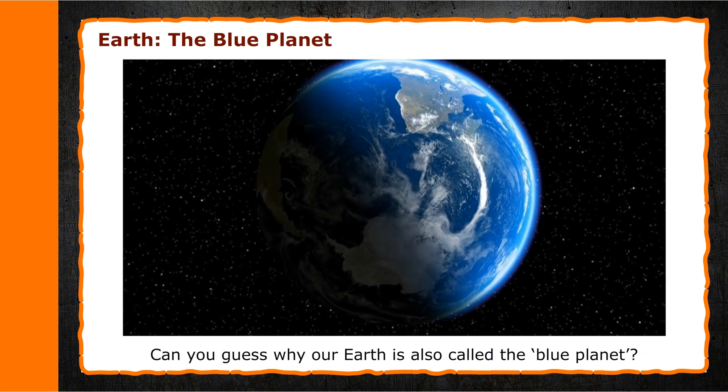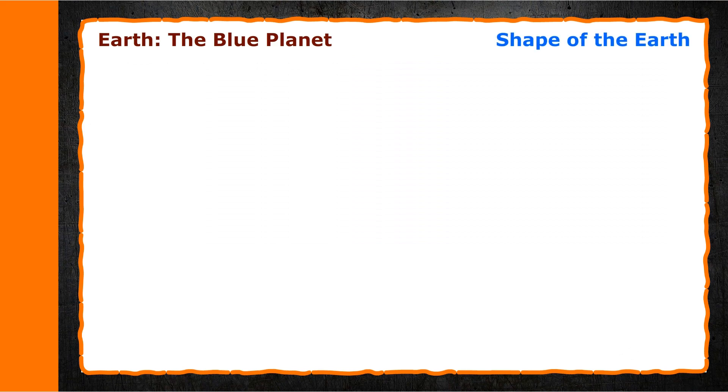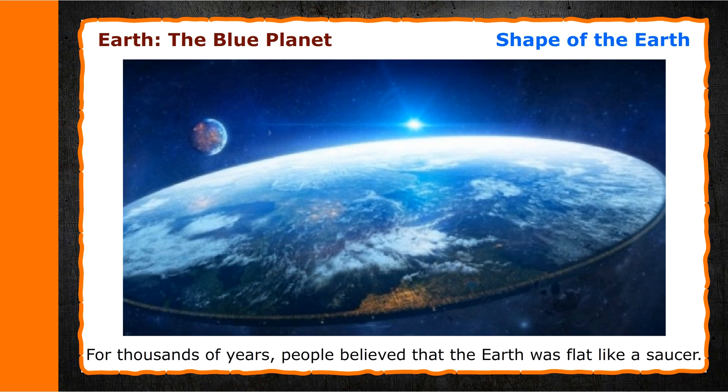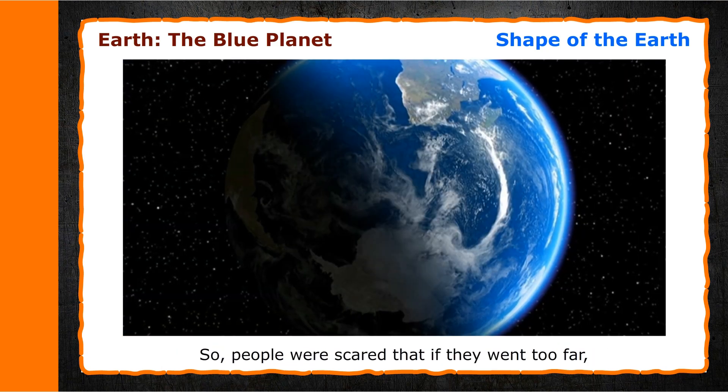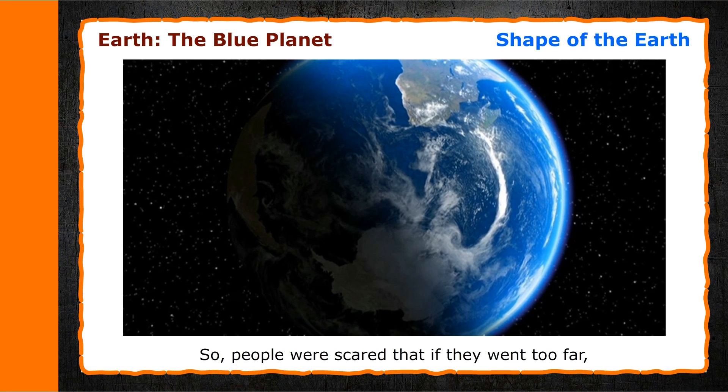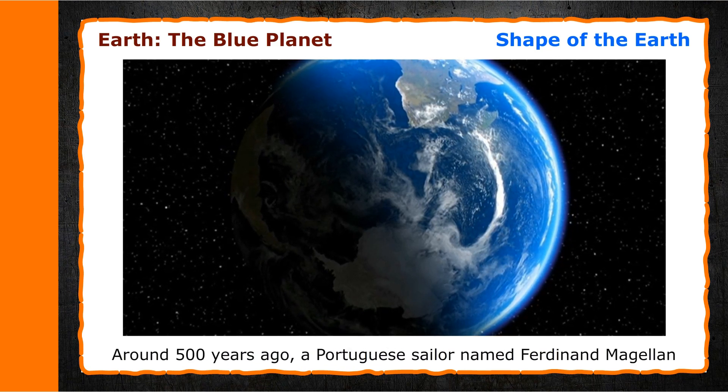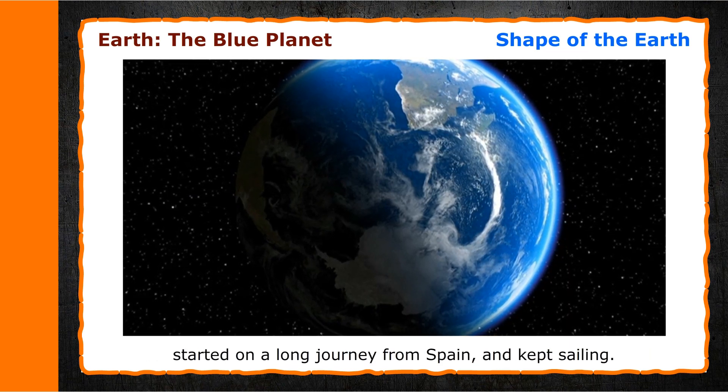Shape of the Earth. For thousands of years, people believed that the Earth was flat like a saucer. So people were scared that if they went too far, they would fall off the Earth's edge. Around 500 years ago, a Portuguese sailor named Ferdinand Magellan started on a long journey from Spain and kept sailing.